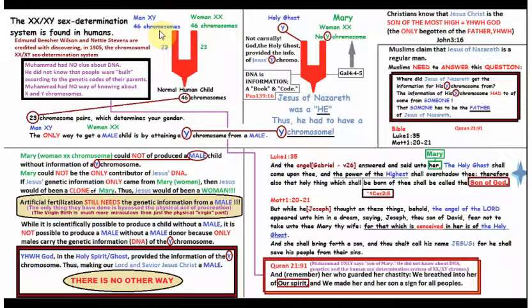Now, men have an X and a Y chromosome. Women have XX. So a woman does not have a Y chromosome. When a man and a woman come into union and a child is conceived, a normal human child will have 46 chromosomes. There are situations of Down syndrome and things like that, but we're talking about a normal human being. So a normal human being will have 46 chromosomes, and he or she will have 23 from their father and 23 from their mother. That's 23 chromosome pairs, which determines your gender.